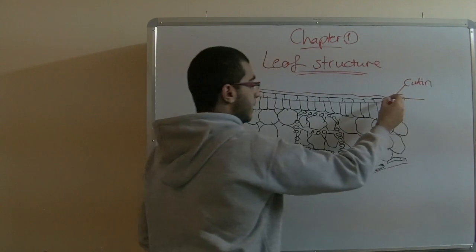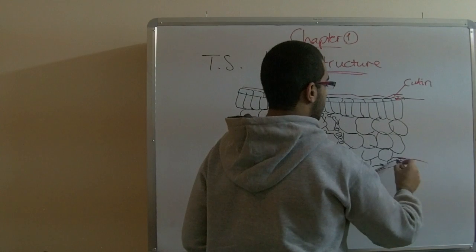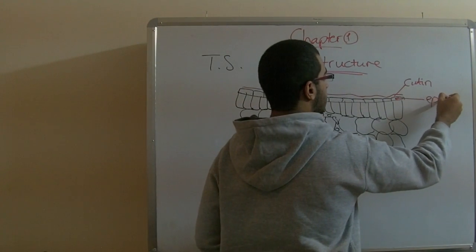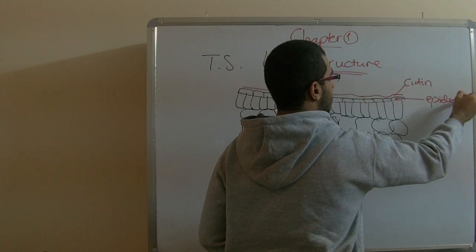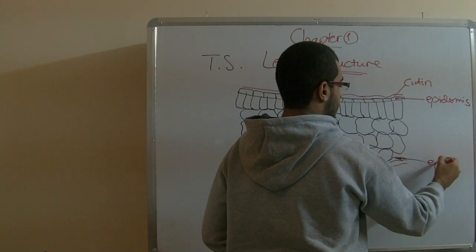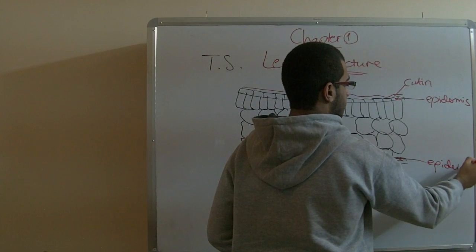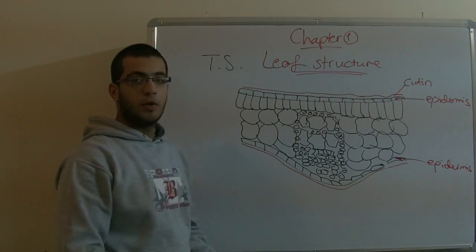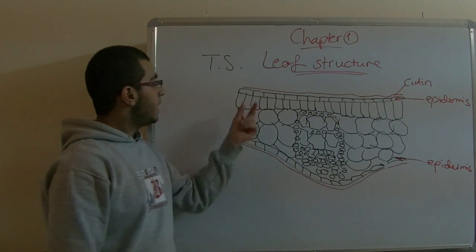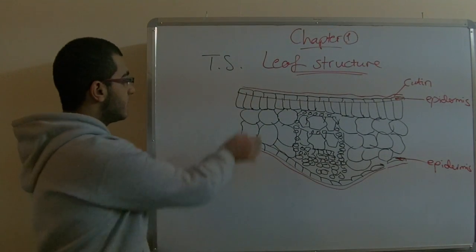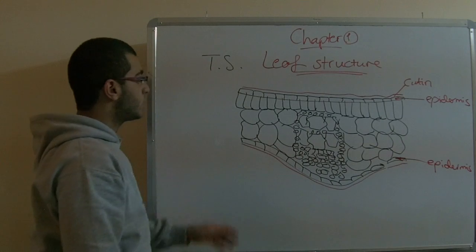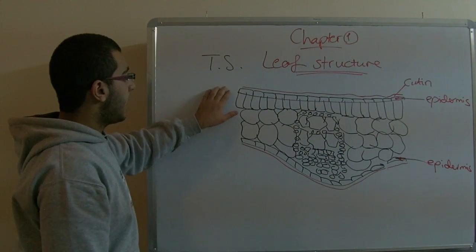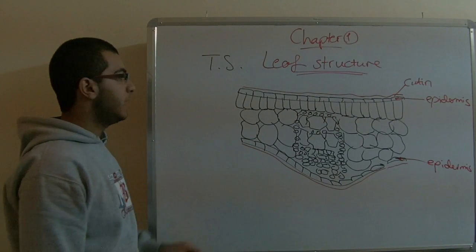The second thing is this layer, which is the epidermis in the upper part and in the lower part. This epidermis has cells which are barrel-shaped and they are close to each other. There are upper and lower epidermis in the leaf.